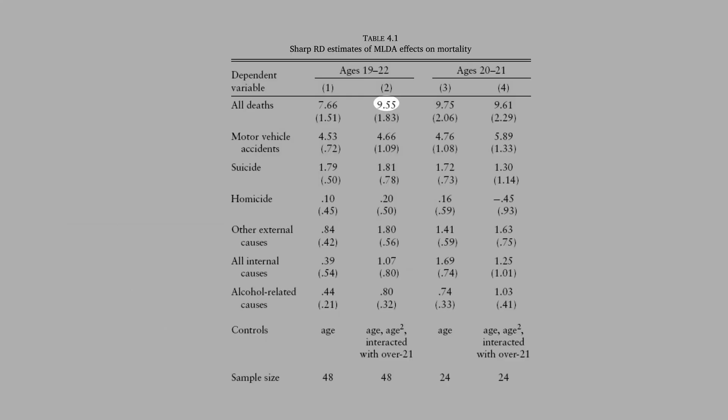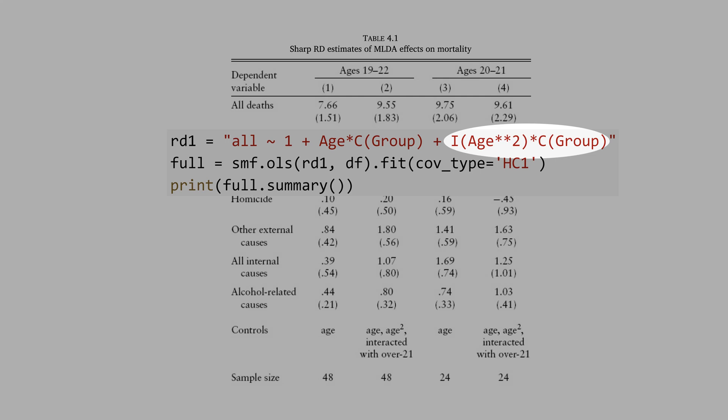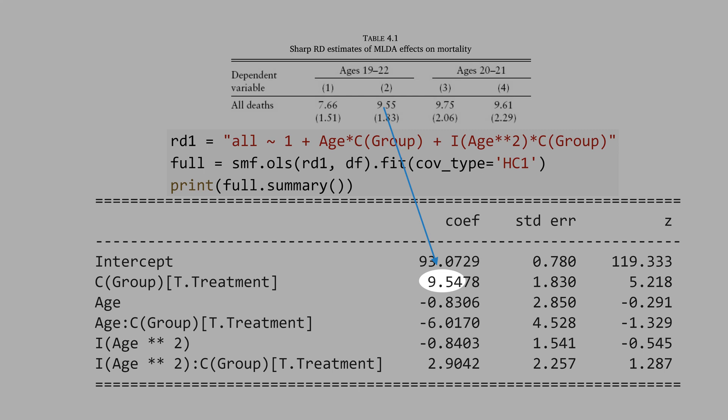Now let's return to the table. See this result here: 9.55. The difference is that this model controls for age squared and the interaction between age and the over-21 indicator. Let's run this specification. We added the interaction between age and the treatment variable, and the interaction between age squared and the treatment variable. We replicate the 9.54 with the same standard error of 1.83.